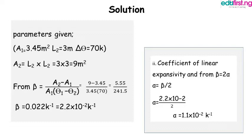The given parameters are: A1 equals 3.45 meters squared, l2 equals 3 meters, and delta-theta equals 70 K. Remember delta-theta equals theta2 minus theta1, and theta1 was given as zero, so the temperature rise is 70 K. Our A2 equals l2 times l2, that is l2 squared, so A2 equals 3 times 3 which equals 9 meters squared.